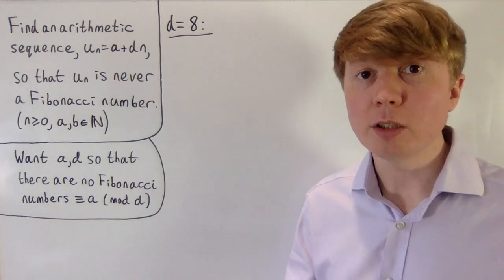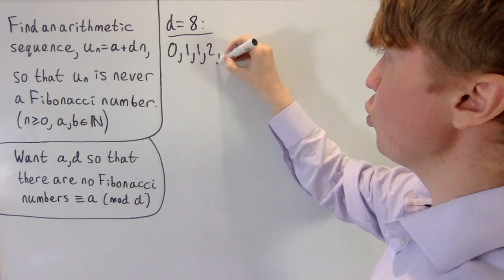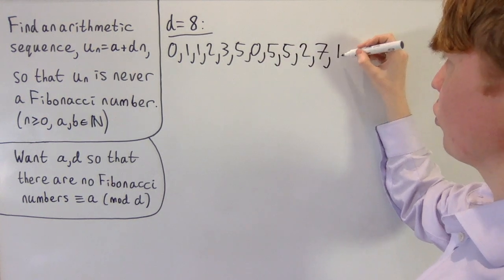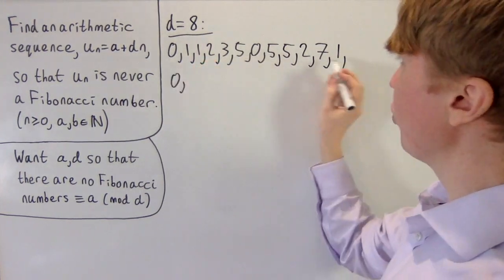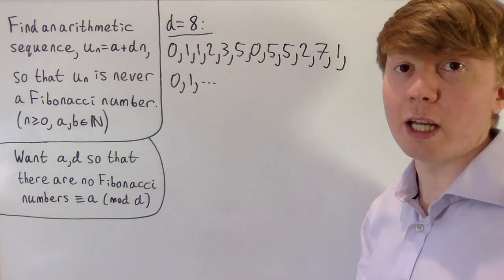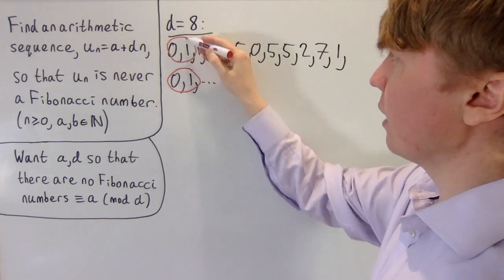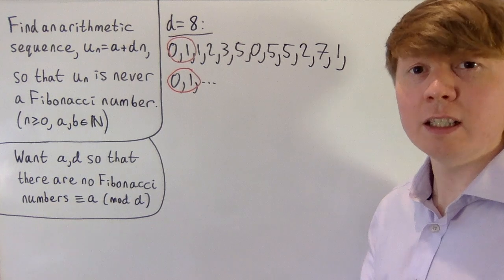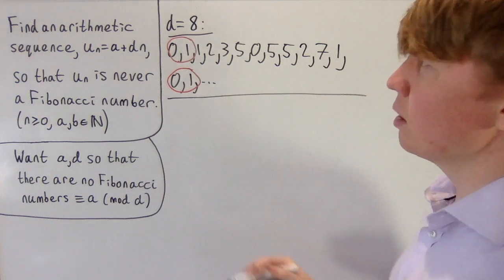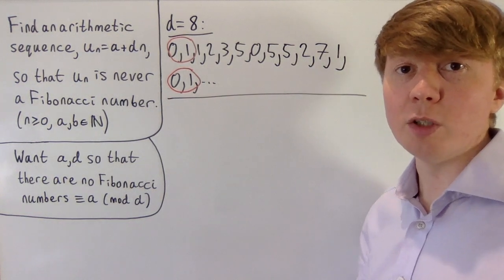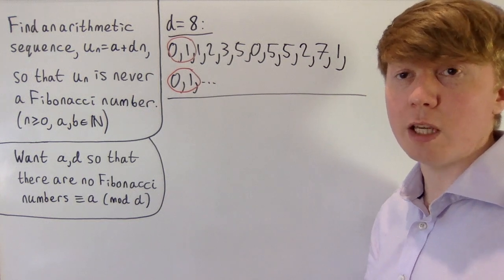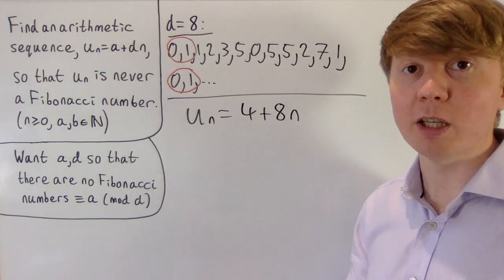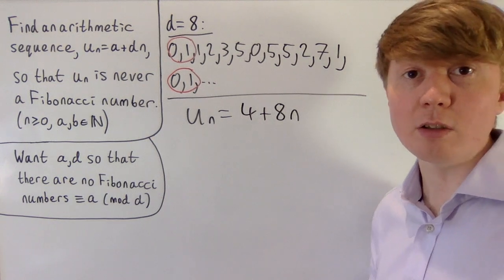For d equals 8, Fibonacci numbers modulo 8 go 0, 1, 1, 2, 3, 5, then 3 plus 5 back to 0, then 5, 5, 5 plus 5 gives 2, then 2, 7, 1, then 7 plus 1 gives 8 which returns to 0, and 1 plus 0 gives 1. The sequence loops back. Modulo 8 we see 0, 1, 2, 3, 5, and 7 — but 4 and 6 never appear! So we can take u_n equals 4 plus 8n, and since nothing in the Fibonacci sequence is equivalent to 4 modulo 8, this arithmetic sequence never intersects the Fibonacci numbers.